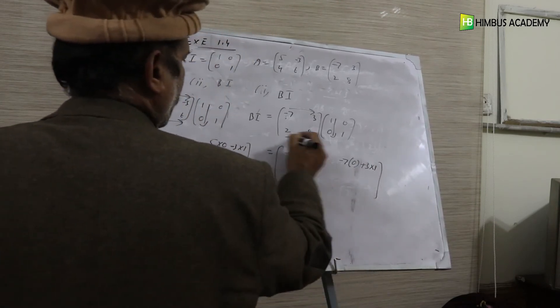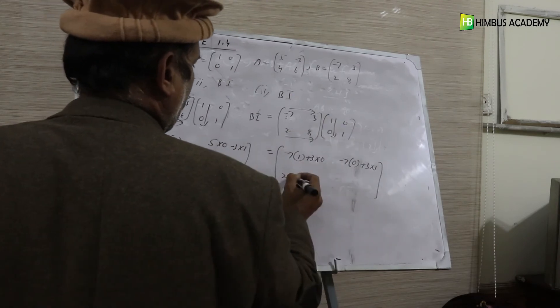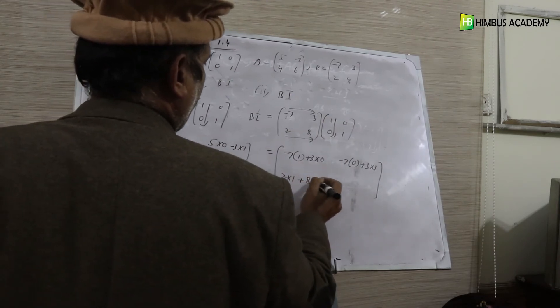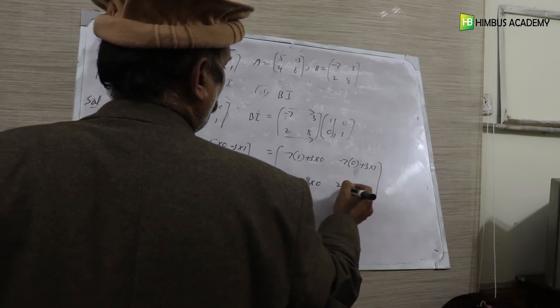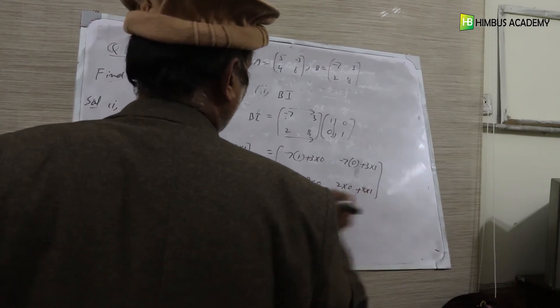Second row with first column: 2, 1, 0 plus 8, 0, 0. Second row with second column: 2, 0, 0 plus 8, 1, 0.